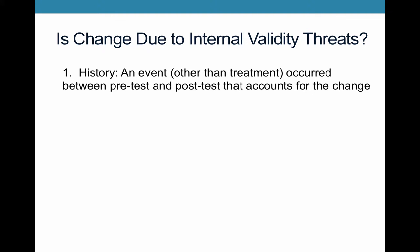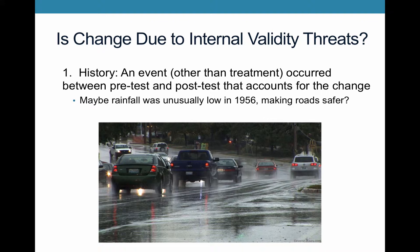So imagine that maybe rainfall was especially low in 1956, that the roads were actually a lot safer than they had been in prior years. And that's what really accounts for it. So here, that event, that other potential confound, would be rates of rain. And so that's introduced, making these roads safer. And it's not really due to the effect of that policy at all.